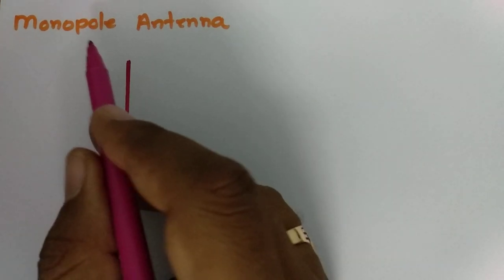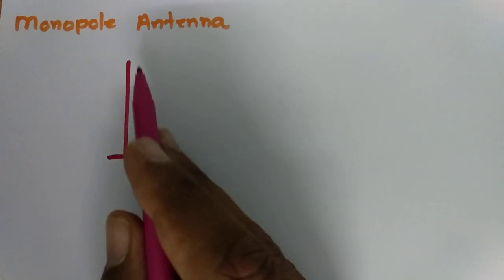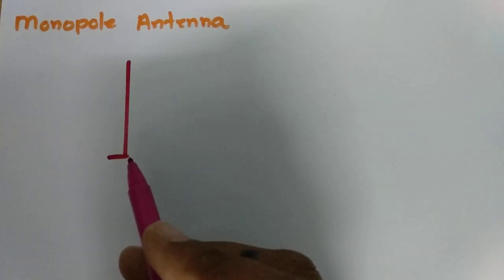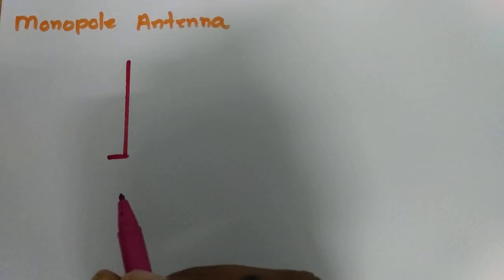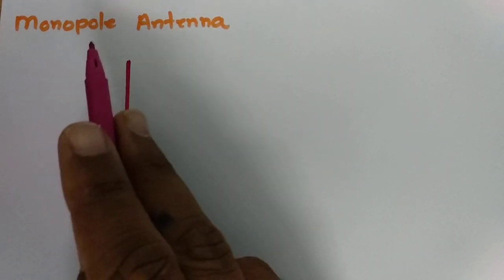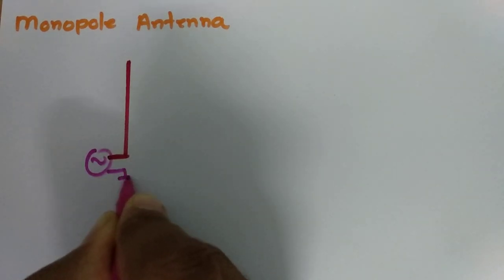Welcome to antenna and wave propagation playlist. In this session, I will explain monopole antenna. In monopole antenna, we have only one pole, while in case of dipole antenna there are two poles. I will explain a few basics regarding monopole antenna and how it radiates. When we talk about monopole antenna, we need to feed it with respect to ground.